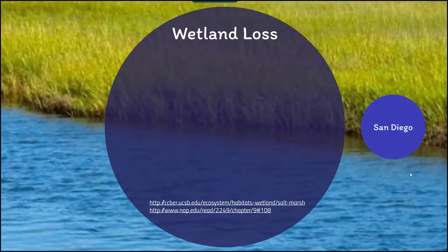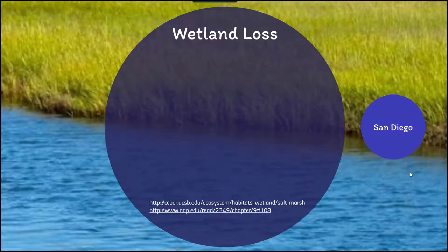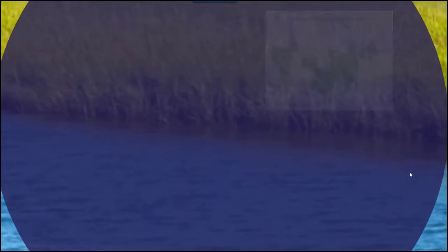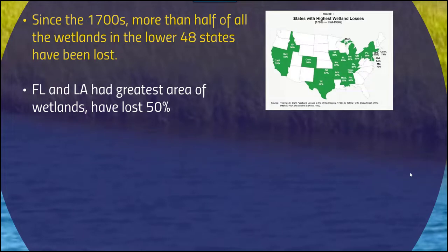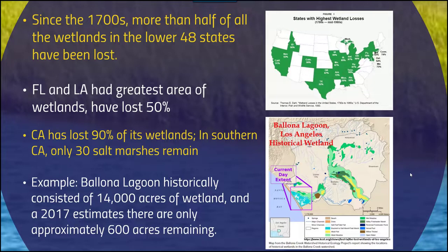Loss of wetlands is a huge issue within our coastal communities. These estuaries act as nurseries for a wide diversity of species, as a filter, a buffer for flooding, and for nutrient overloading. The destruction of these wetlands can be quite critical for associated marine ecosystems. Since the 1700s, more than half of all wetlands in the lower 48 states have been lost. Florida and Louisiana have the greatest area of wetlands and have lost about 50% of those. California has lost a little over 90% of its wetlands, and in Southern California, we only have 30 salt marshes remaining.